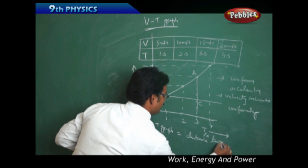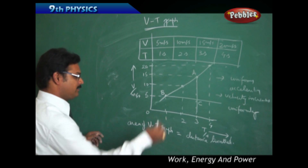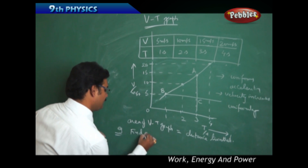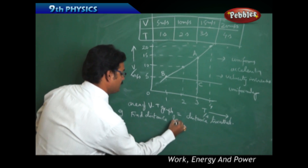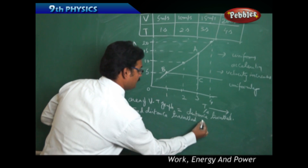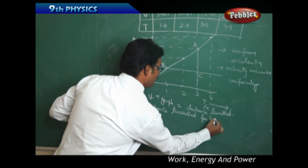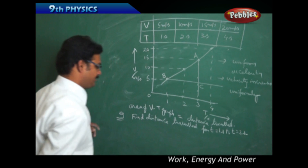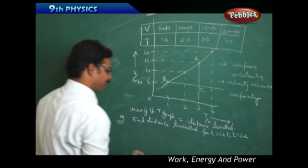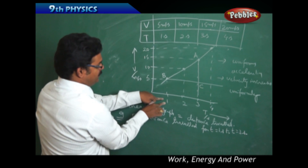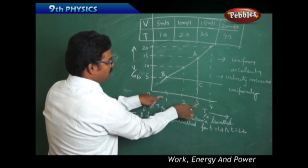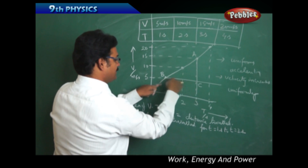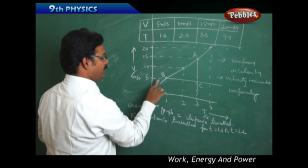Here is an example: find the distance traveled from t equals 1 second to t equals 3 seconds. For t equal to 1 second, mark this point, and for t equal to 3 seconds, mark this point. So we draw the points at 1 second and 3 seconds on the graph.